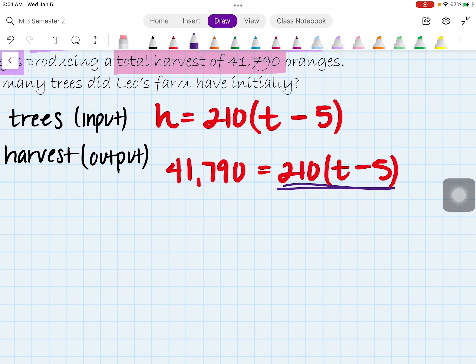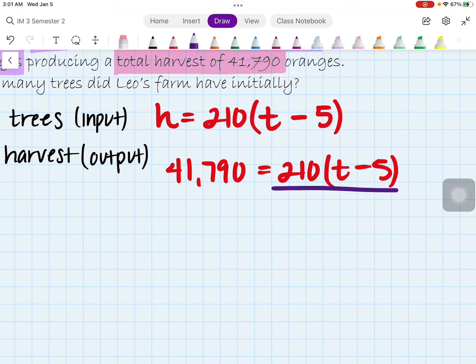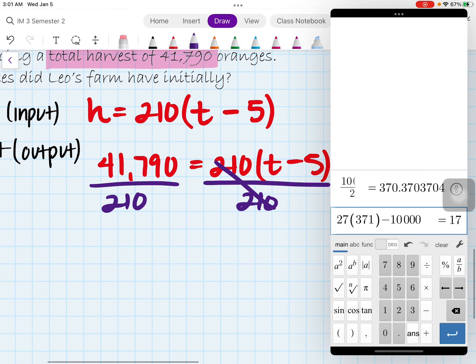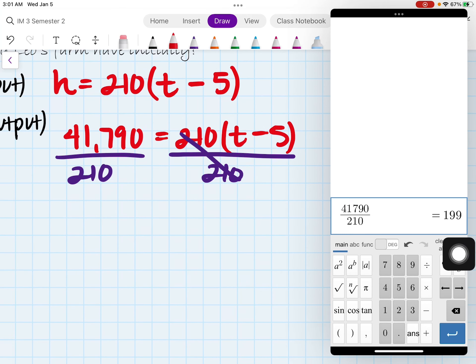So I'm going to divide this side, divide this here by 210, and this here by 210. So let's bring on our calculator here. And I have 41,790 divided by 210. And luckily for us, that does divide evenly. So that gives us 199 equal to t minus 5.